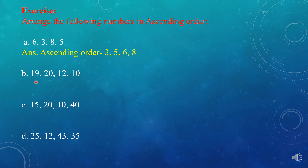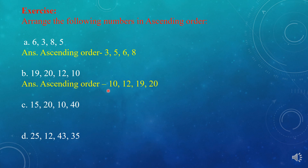The second question is: 19, 20, 12, 10. What is the ascending order of these numbers? The smallest number here is 10. So we write 10 first, then 12, then 19, then 20.